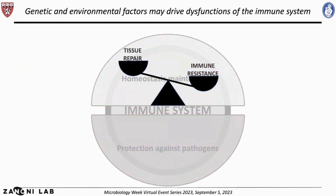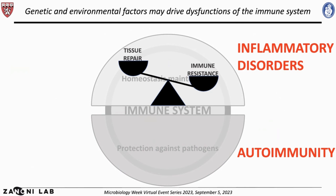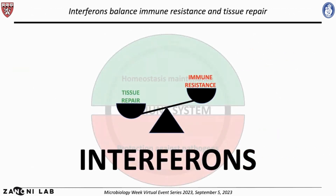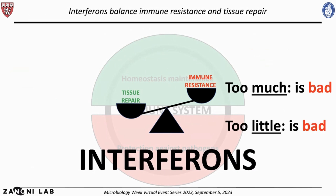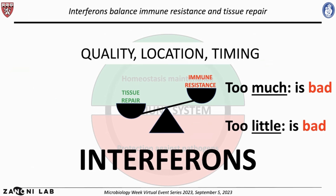Based on genetic, environmental factors, or exposure to specific pathogens, this balance may be altered, leading to inflammatory disorders and autoimmunity. Fundamental to maintaining this balance are interferons. Having no interferons is bad, but having too much is also bad. What I'll try to convince you today is that it's not only a matter of quantity but also quality — which interferons are produced, where they are produced, and when they are produced.